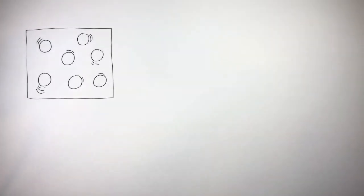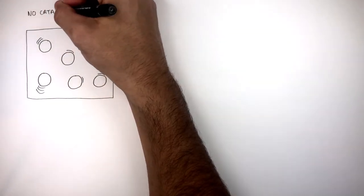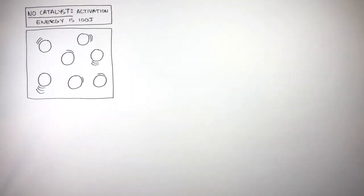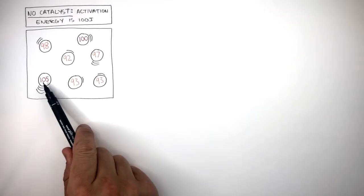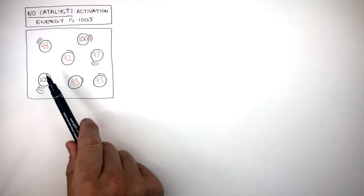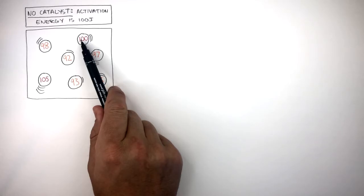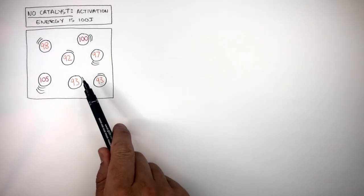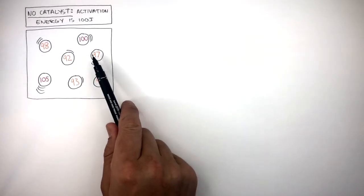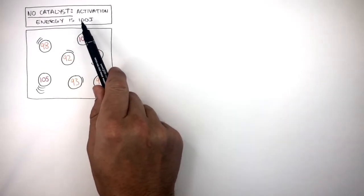Here we have a container of particles where there is no catalyst and the activation energy is 100 joules. This means for a reaction to take place, the particles must be storing at least 100 joules of energy. This particle is storing 105 joules of energy, so if it collides, it can successfully collide. Whereas these particles are storing less than 100 joules of energy, so if they collide with any of the particles, there will be no successful collisions.